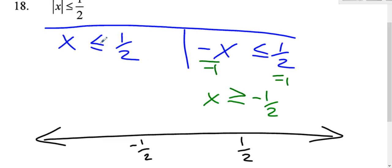We have a bracket at one half pointing to the left. A bracket at negative one half pointing to the right.